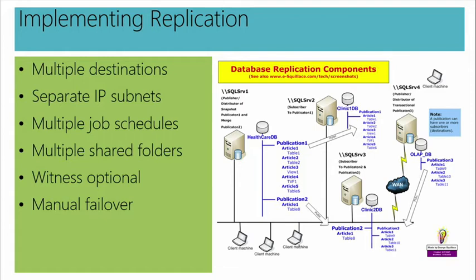Now, there's no automatic failover. If I'm pointing an application to some data on one machine and it fails, there's absolutely nothing that causes or redirects a client. This would be an entirely manual process, and it depends on how the application makes a connection. If you can point to a different IP address or change the connection string of the application, that would dictate in part how you would perform failover. There are shared folders where replicated updates are stored; the distributor picks them up there and then moves them along. Lots of moving parts here.